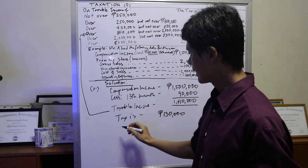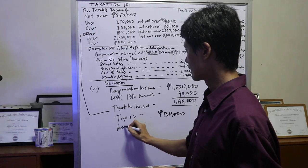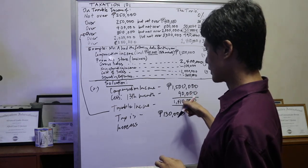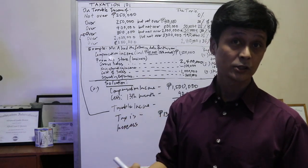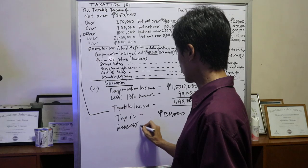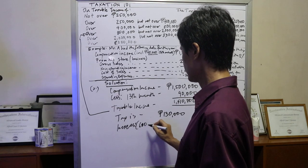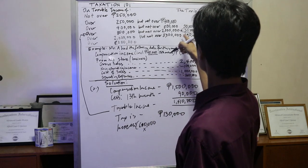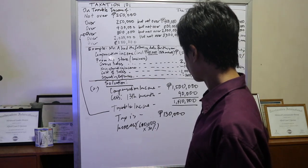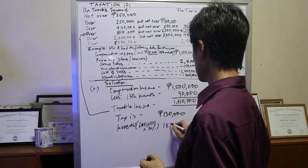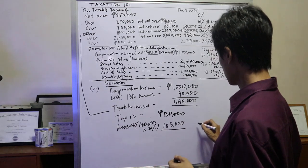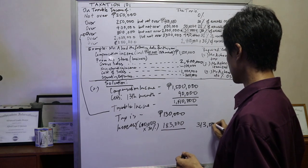Now the excess of the 1,410,000 and 800,000 is 610,000. So this would be 610,000 times 30%, which is 183,000. So you get the total of this one, that would be the tax, 313,000.